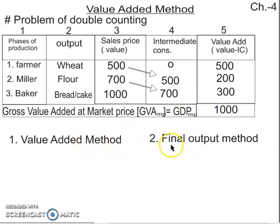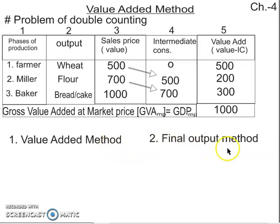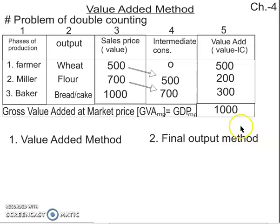We can eliminate the problem of double counting using either of two methods. The first method is the value-added method. The second method is the final output method. Using the value-added method to calculate GDP, we will have no problem of double counting.